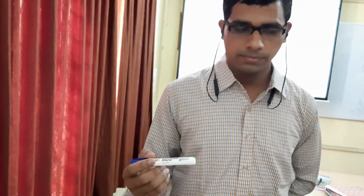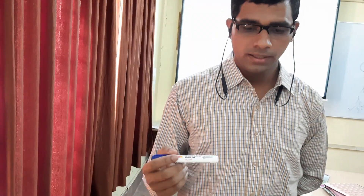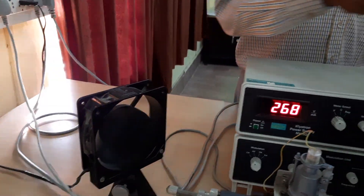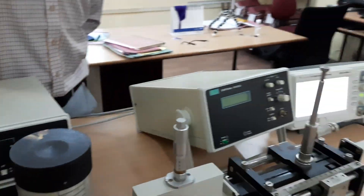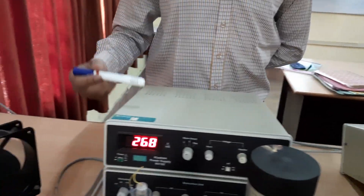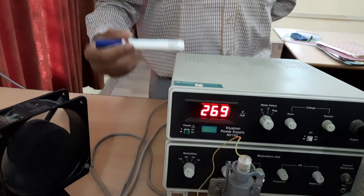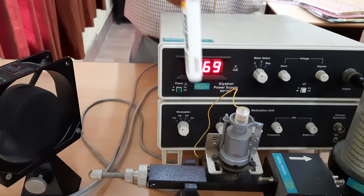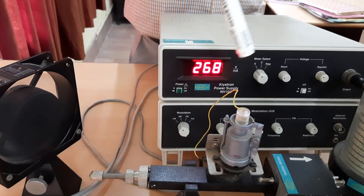Let us come to the hardware part and discuss how to do the experiment. As I mentioned in the last experiment, I made you familiar with different types of microwave components. This entire setup is called the microwave test bench, this is called the klystron power supply, this is called the klystron, and this is the microwave source.